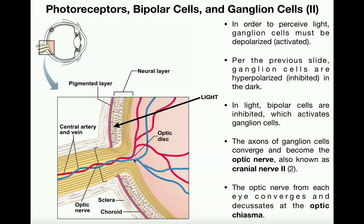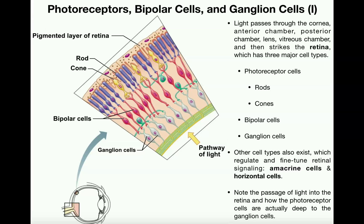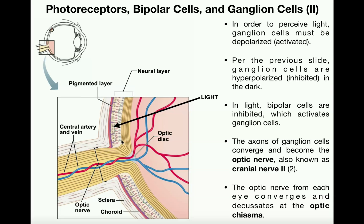When light enters your eye, it's going to go through the pupil and travel to the back of the eye where the retina is. In following that path, the light has to pass through the cornea, the anterior chamber, the posterior chamber, the lens, and then through the vitreous chamber, and finally that light strikes the retina at the back of the eye, which you can see more macroscopically in this picture here.